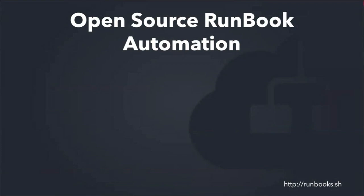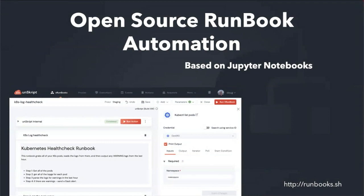I'm going to talk about an open source runbook automation tool — the URL to the GitHub is runbooks.sh. It's built on top of Jupyter Notebooks. If you don't know what a Jupyter Notebook is, it's a way of doing Python snippets of code in your browser. You can have text describing what's going on and then little bits of Python code, and as you run each bit of code you're generating a set of steps that complete a task. A runbook is a set of steps that help you complete a task, and this tool is built on Jupyter Notebooks where you build your runbooks and then automate them.